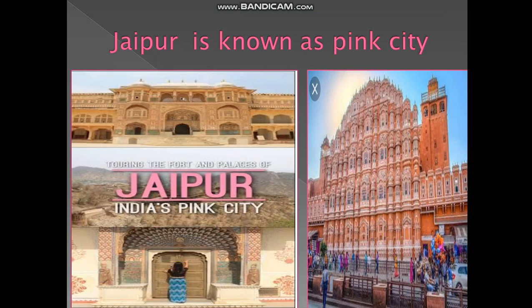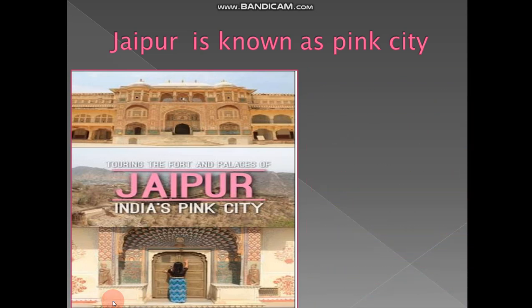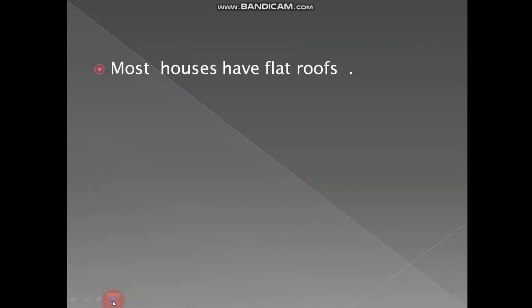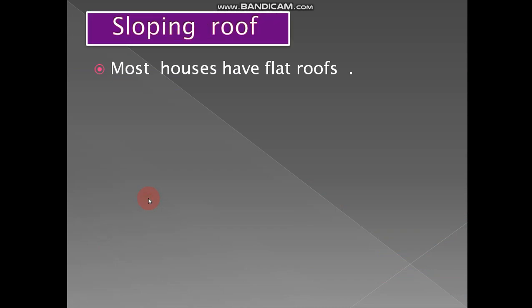Next, Jaipur. Do you know anything about Jaipur? Jaipur is known as the pink city. Why? Because in Jaipur, all the houses are painted in pink color. Wherever you go, all the walls and all the houses are painted pink. That's why it is known as the pink city.